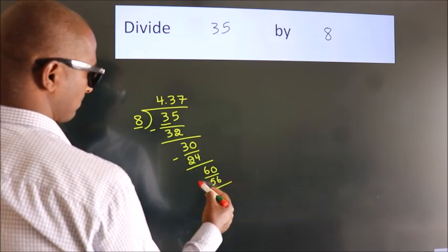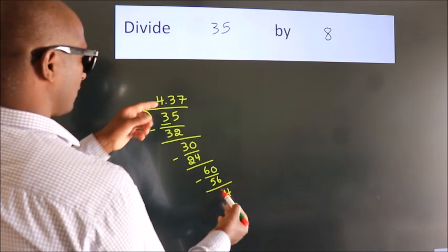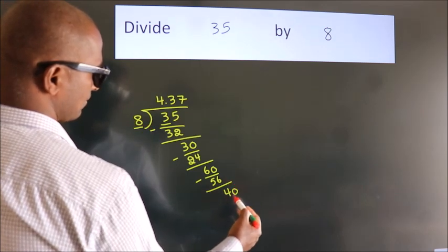Now we subtract. We get 4. After this, we already have the decimal, so directly take 0. So, 40.